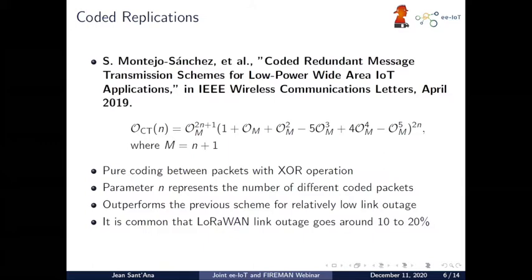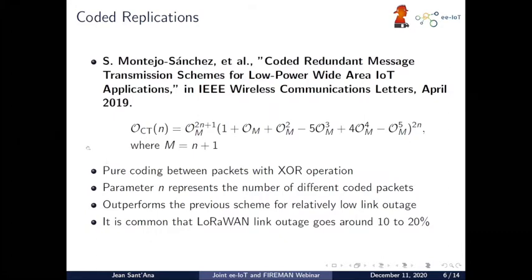Last year we had this other work from another colleague, Samuel Montejo Sanchez, where instead of doing simple replication, he adds coding between packets with simple XOR operations. Now instead of that very simple equation, we have a longer one, and the number of replications equals capital M = N + 1. The parameter N represents the number of different coded packets. The result states that this codification-replication outperforms the previous simple replication scheme for relatively low link outage.